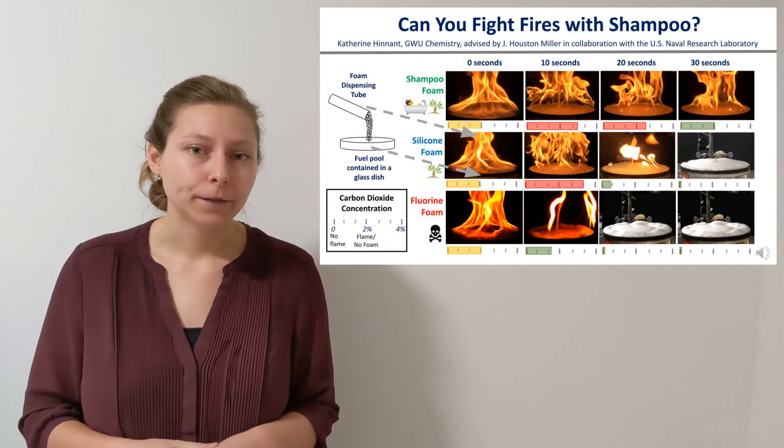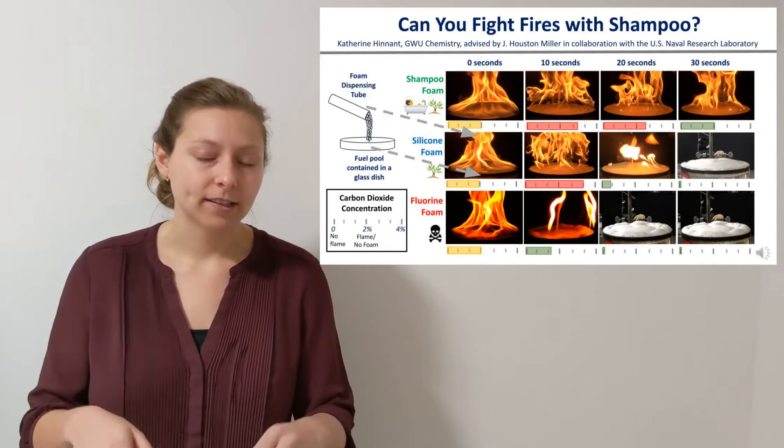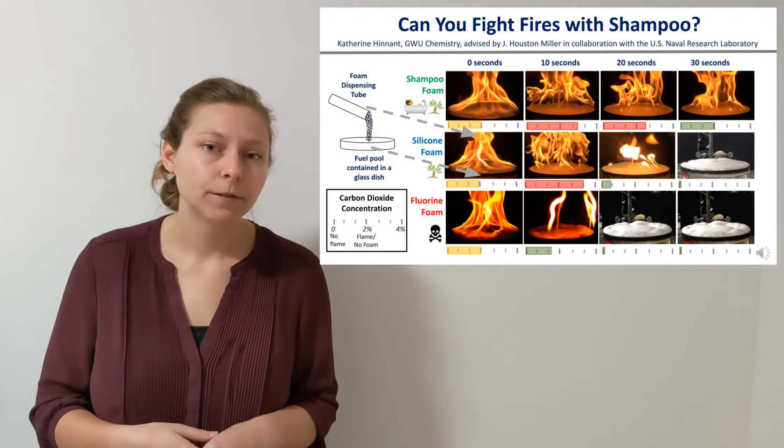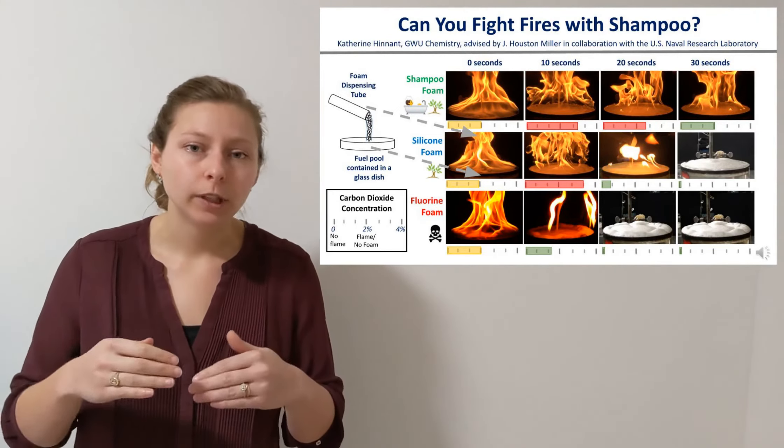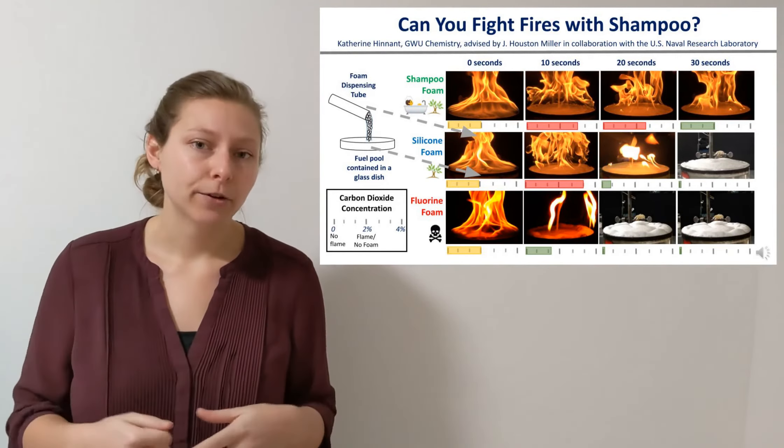Surfactant containing firefighting foams flow out of nozzles and float on top of burning fuel surfaces. The foam acts as a barrier between the fuel and the flame above, smothering the flame.